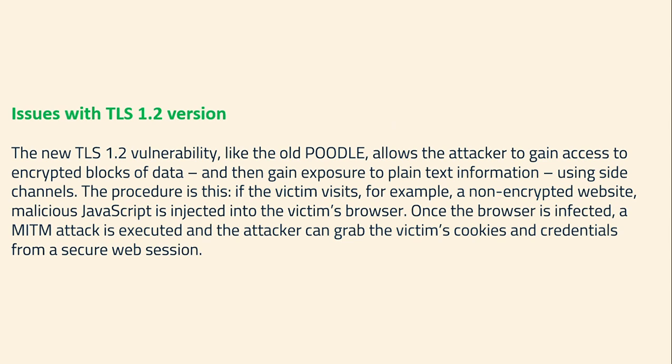So what was the issue with TLS 1.2? The TLS 1.2 vulnerability, like the old POODLE attack, allows an attacker to gain access to encrypted blocks of data and gain exposure to plain text information using side channels. If the victim visits a non-encrypted website, malicious JavaScript is injected into the victim's browser. Once the browser is infected, a MITM attack is executed and the attacker can grab the victim's cookies and credentials from a secure web session.